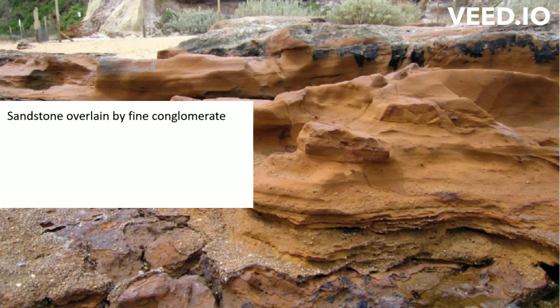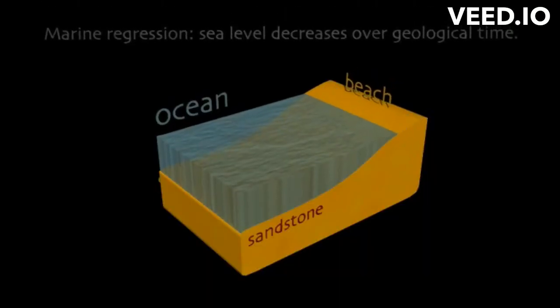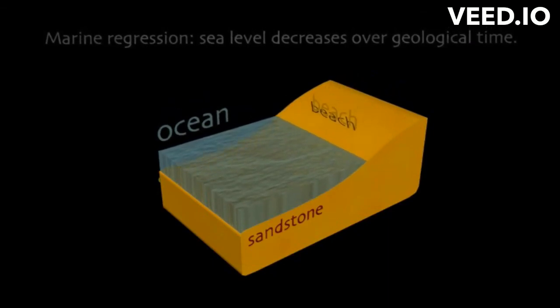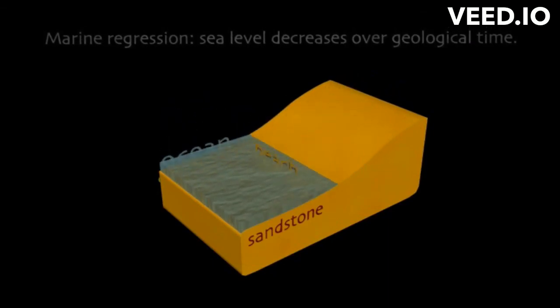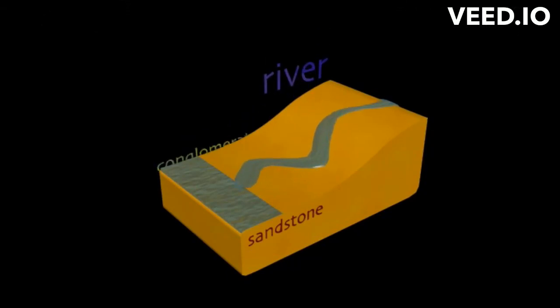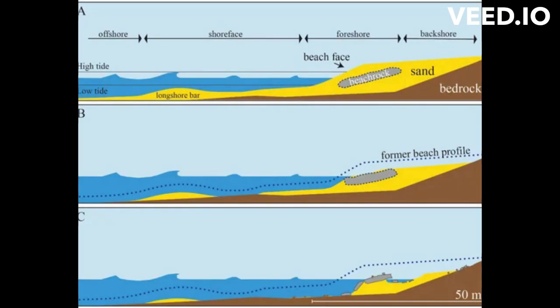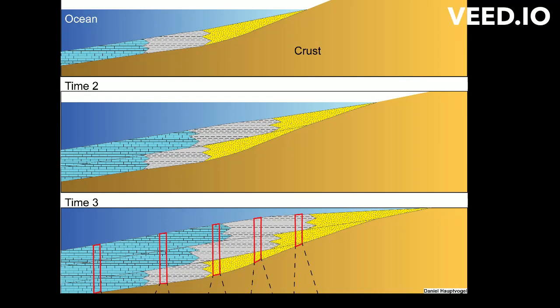Regressive sequences are widely seen in the Transvaal and Witwatersrand supergroups of South Africa. They are less likely to be preserved in the rock record than transgressive sequences, because as sea level falls, the exposed parts of the continent are subjected to the forces of weathering and erosion. Therefore, the sediments are likely to be removed by earth processes rather than kept buried and preserved within the earth.